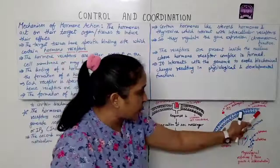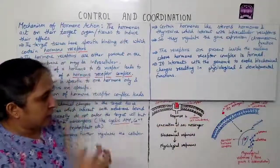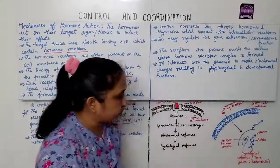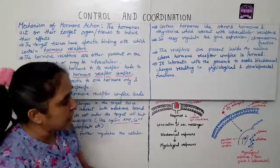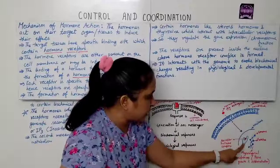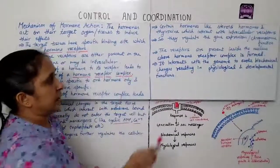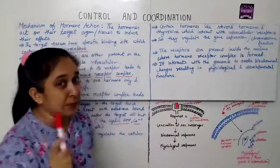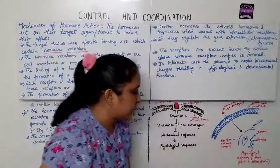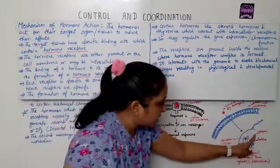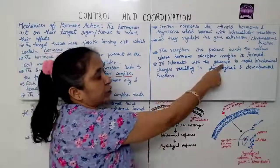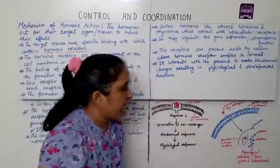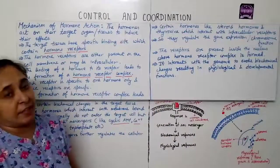Now with another example using a uterine cell membrane — the red color dots represent the hormone, for example estrogen. Estrogen enters the cell with the help of the receptor. Inside the nucleus, the receptor-hormone complex is formed, as the receptors are present inside the nucleus. This hormone-receptor complex then interacts with the genome.